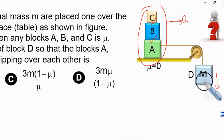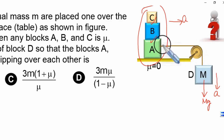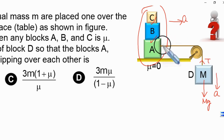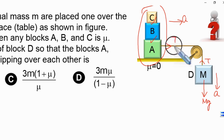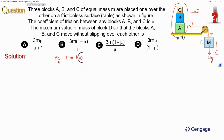Now let us consider the free body diagrams. First, consider block D with mass capital M. Weight capital Mg acts downward. Since the string is light, tension T is the same throughout — acting upward on block D and rightward on block A. The equation of motion for block D is: Mg − T = Ma. Let this be equation number 1.